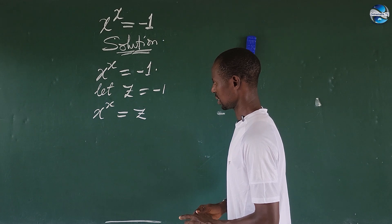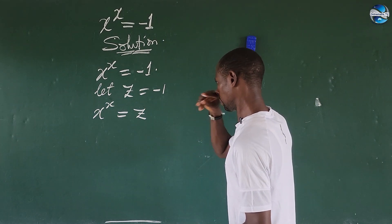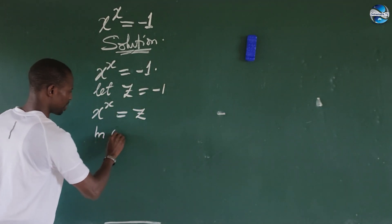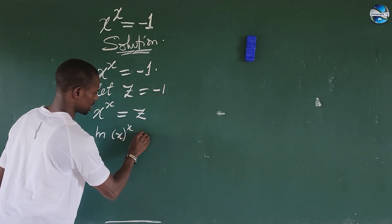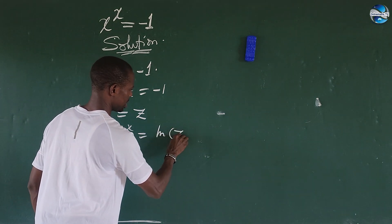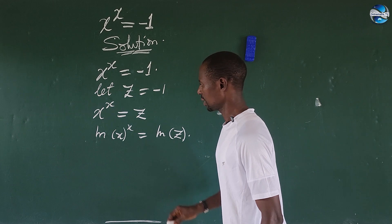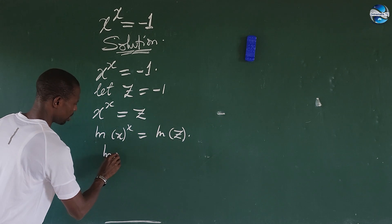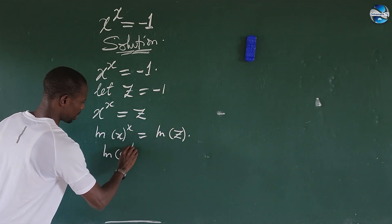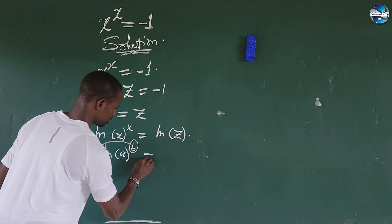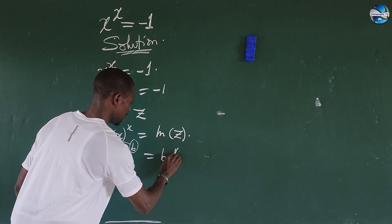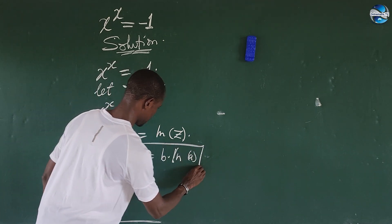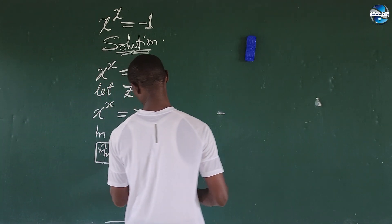What we do now is we want to take the natural log of both sides of the equation. So we have ln of x to the power of x equals ln of z. Using the log law which says that ln of a to the power of b gives us b times ln of a.